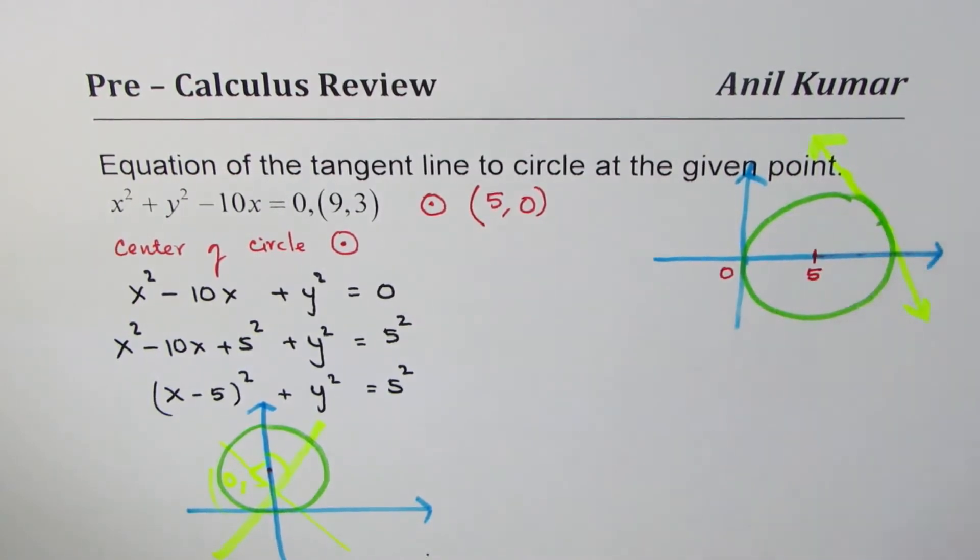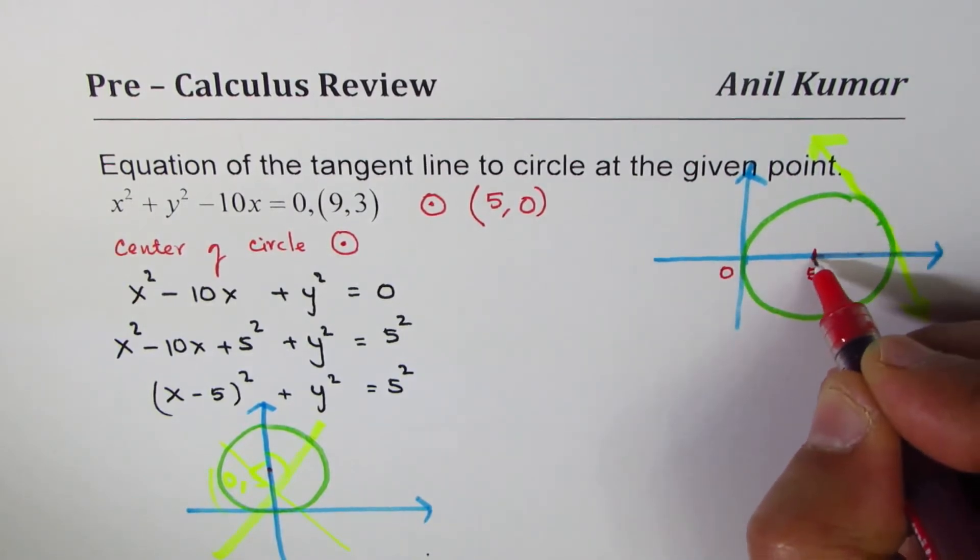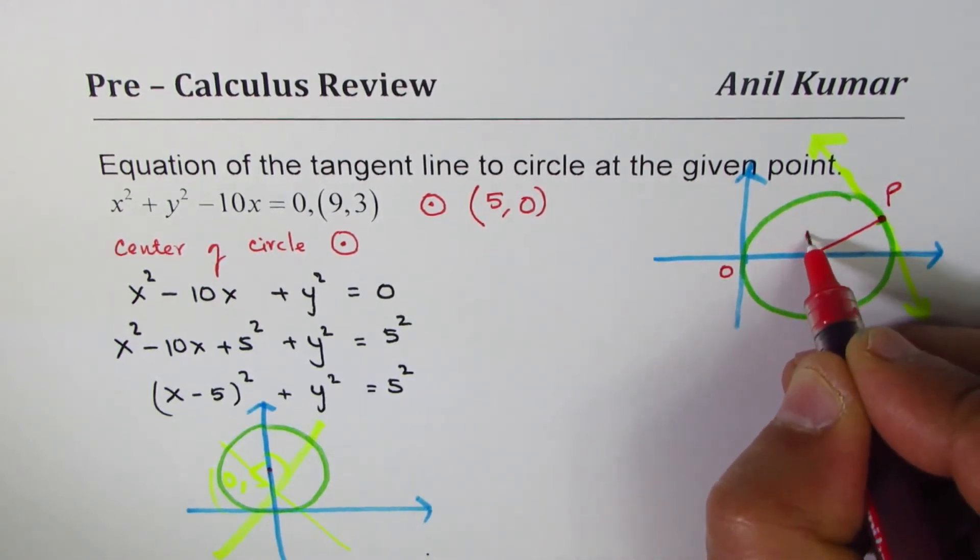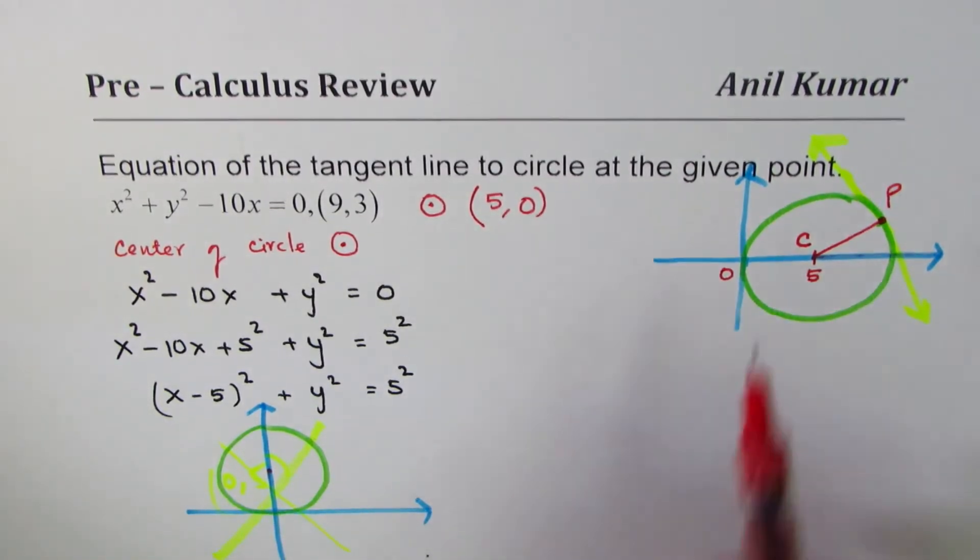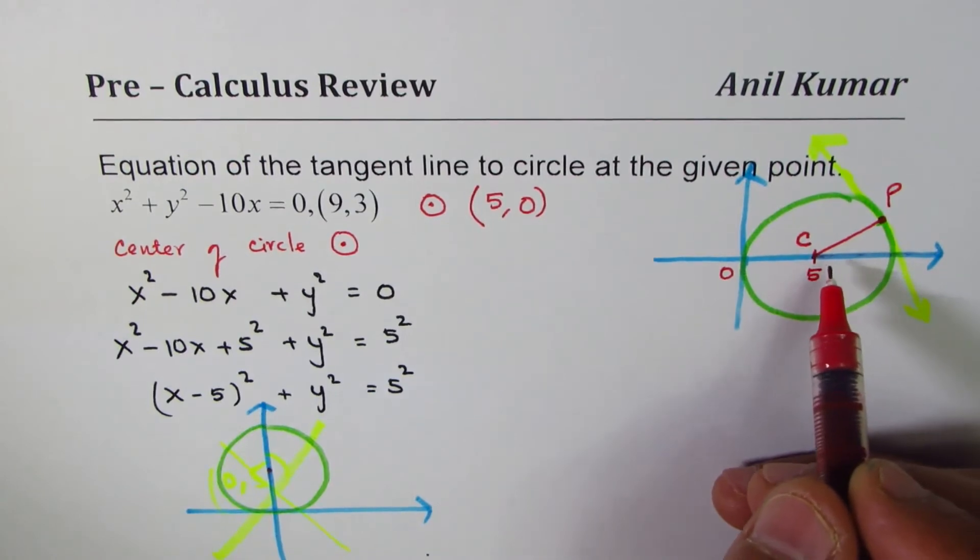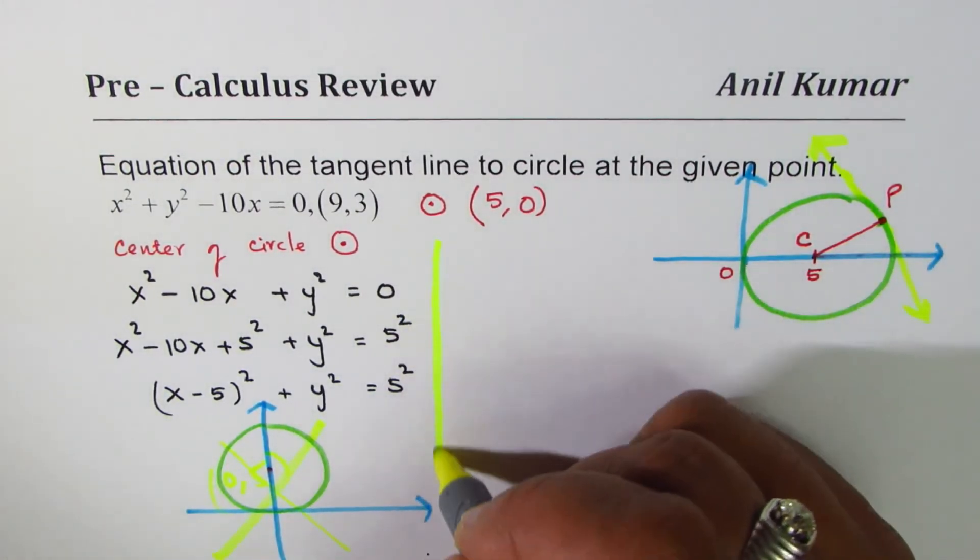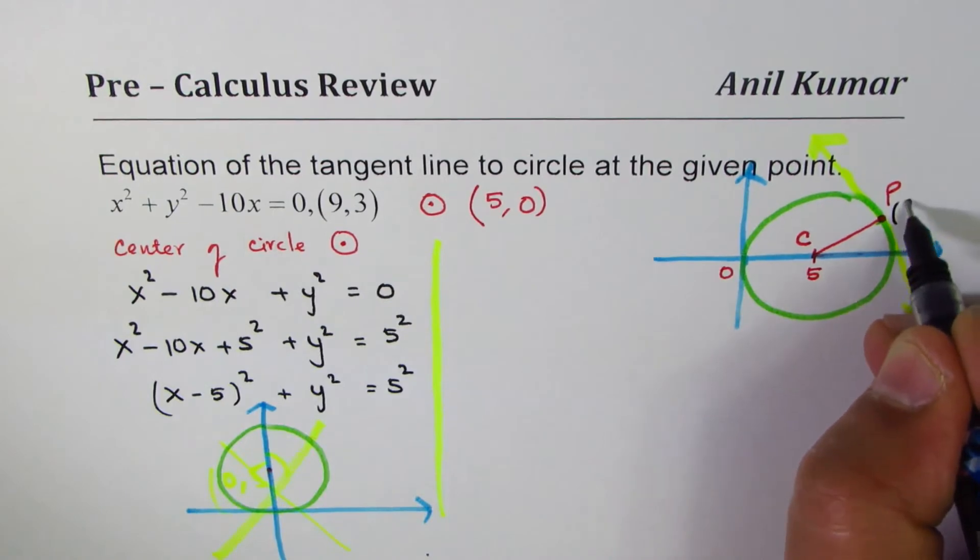So I think this is better. So 9, 3, let's say, will join this point. Let's call this point as P, and we'll call this point center as C. Perfect. So that is the right thing. Let's move forward. How do you find equation of the tangent line? We need to find slope. We already know the point. On this line, the point is 9, 3.